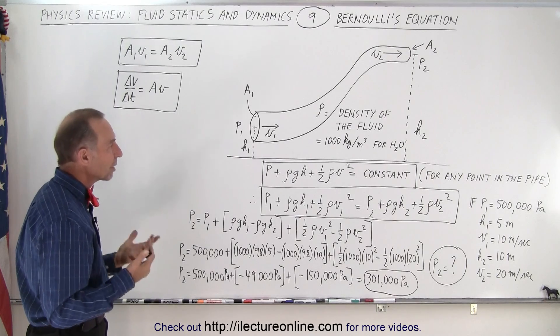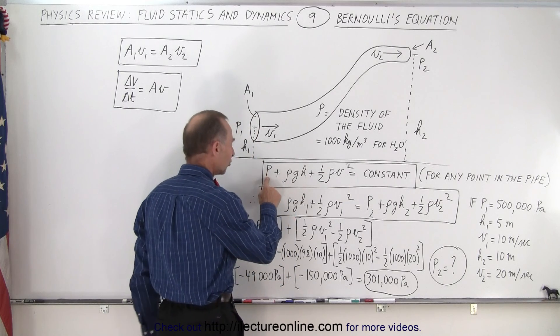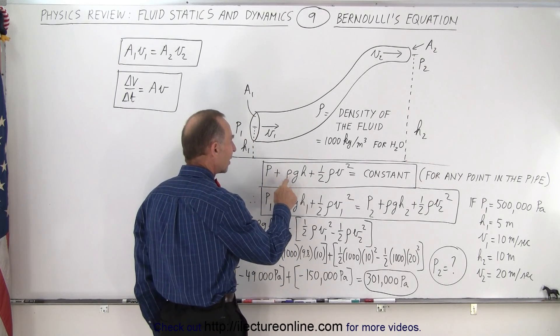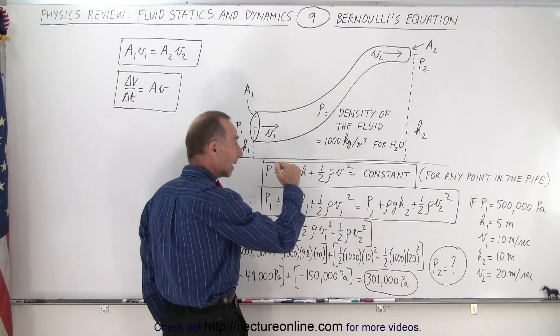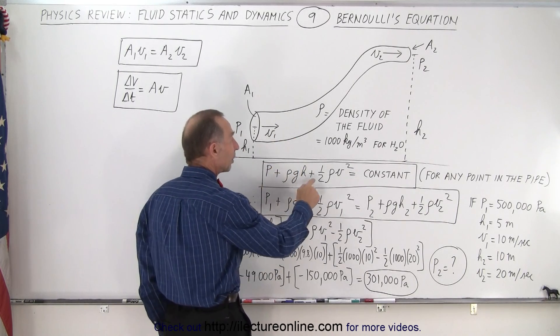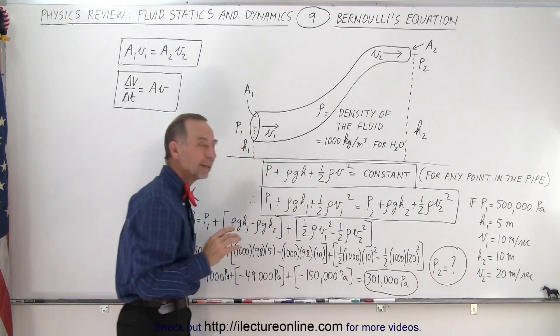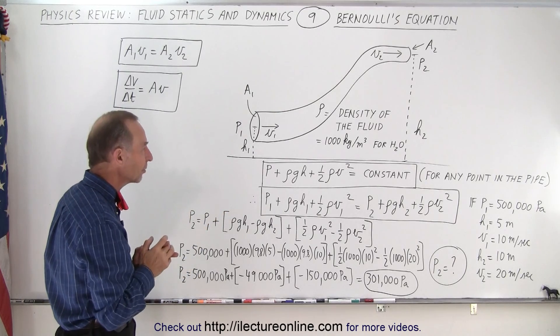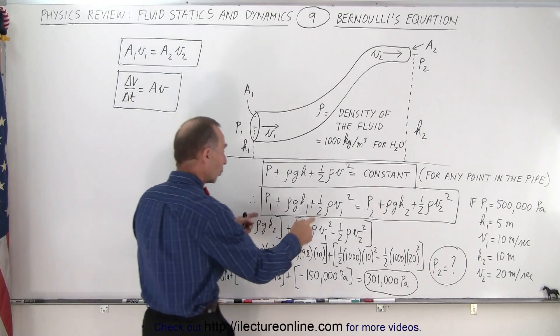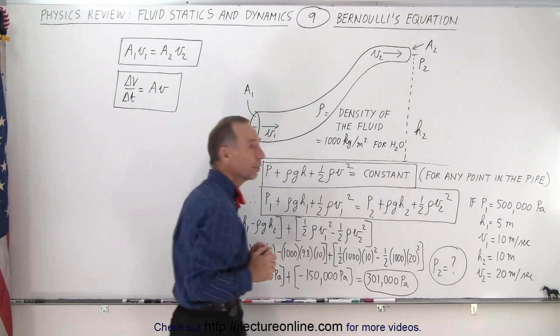Now Bernoulli's equation says that the sum of these three terms, the pressure at any point in the pipe plus the density of the fluid times the acceleration of gravity times the height of the pipe at that point plus one-half the density times the velocity squared of the fluid, always remains a constant. So the sum of those three terms always remain constant, which means that those three terms at one point in the pipe must equal those three terms in another point of the pipe.